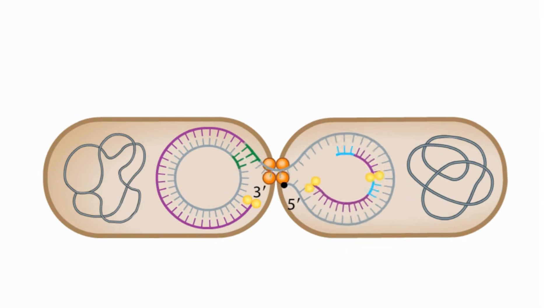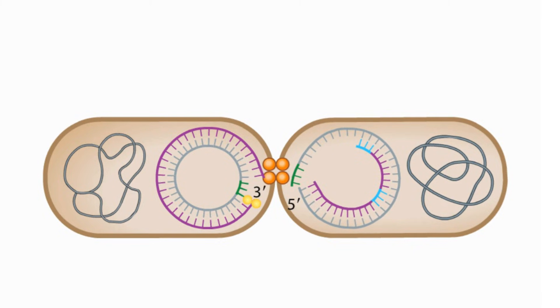When the transfer is complete, the relaxase enzyme ligates the 5' end it was holding to the 3' tail of the transferred strand. Thus, the last portion of the F-factor that is moved to the recipient is Ori-T.